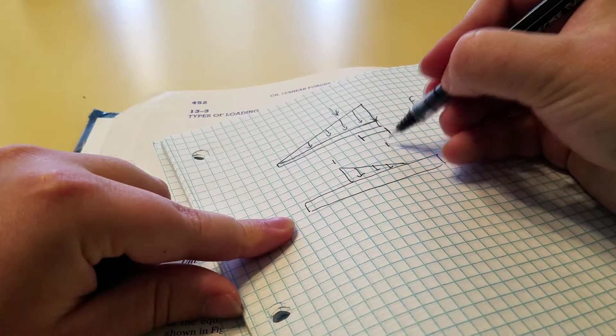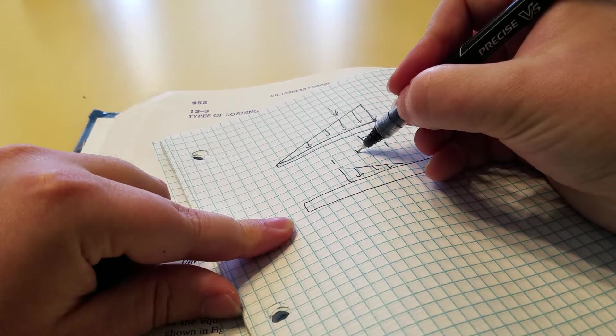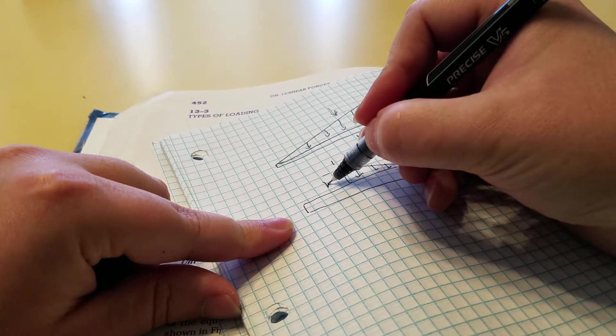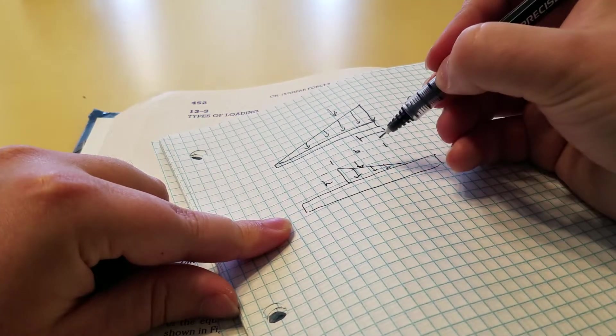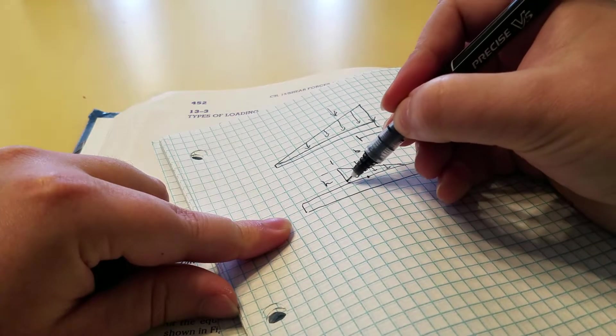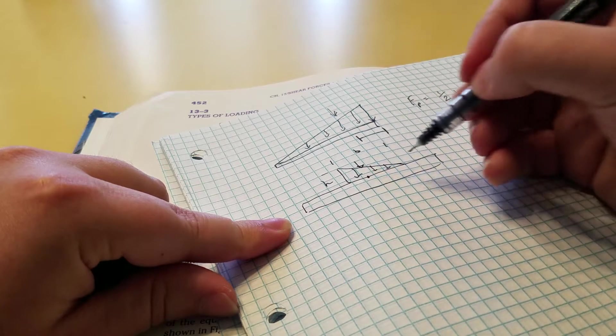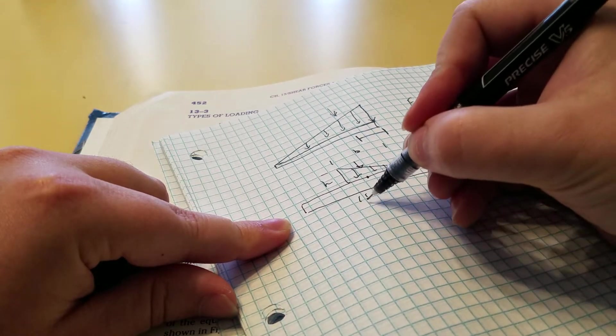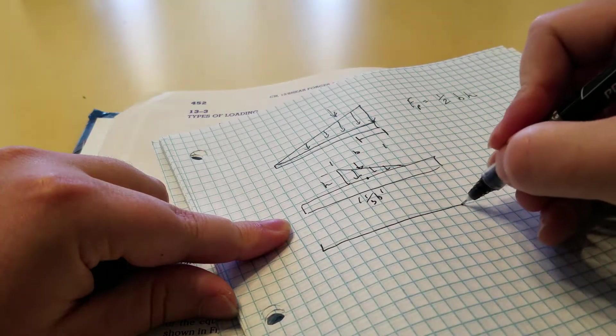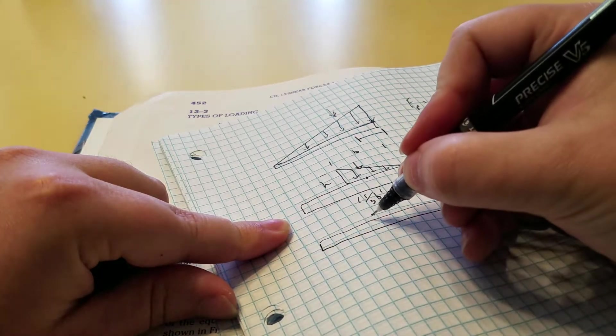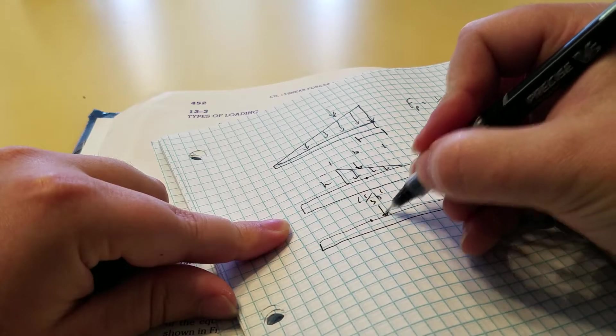So its point center load would be right there, one-third base over. So then it would look like that.